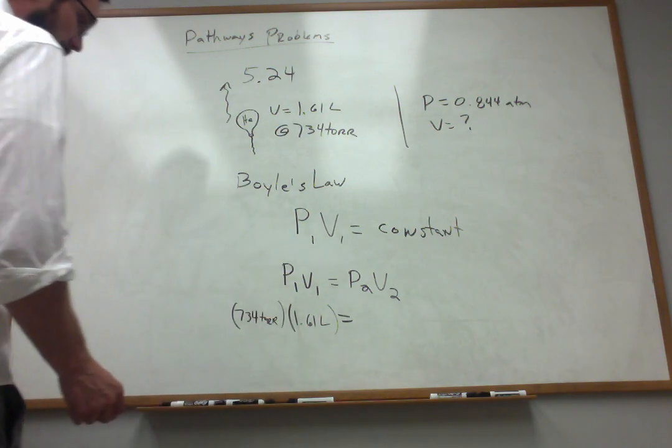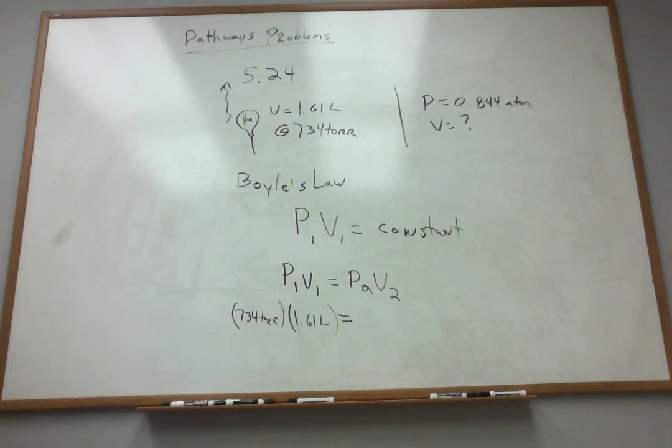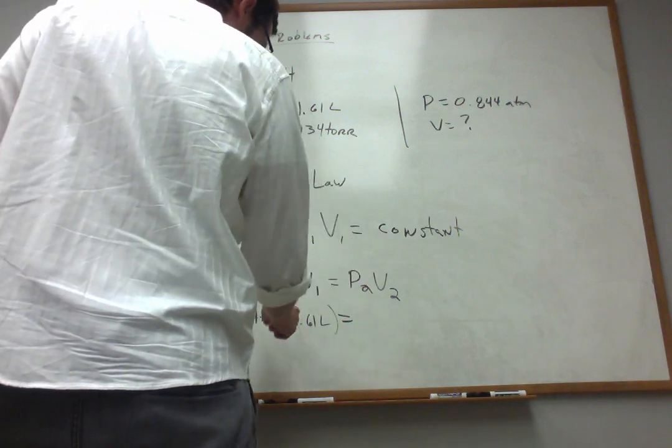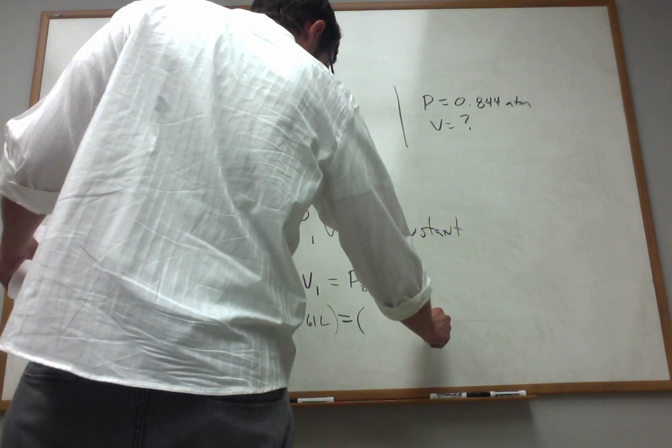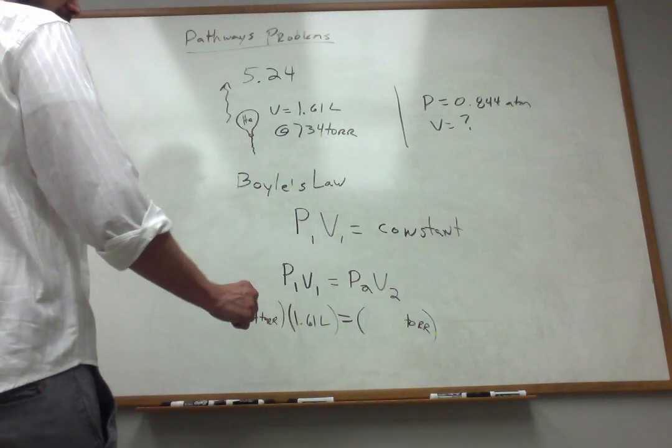Now, I can use torr units, millimeters of mercury in this relationship. I can use atmospheres or any other pressure unit if I want. But I have to be consistent on both sides of the equal sign. So if I use torr over here, I've got to use torr over here as well.